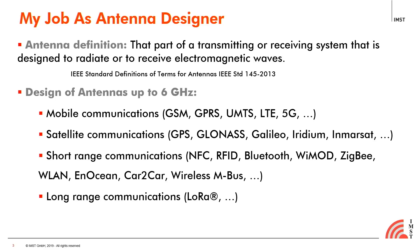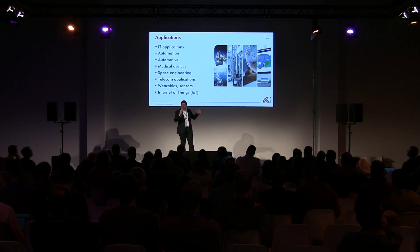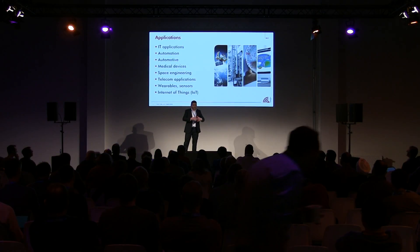You may already be familiar with mobile communications like GSM, UMTS, and 5G now coming on. We also have satellite communications such as GPS, Galileo, and Inmarsat. Then short-range communications — NFC, RFID, Bluetooth, wireless LAN at 2.4 GHz and 5 GHz — and of course long-range communications with LoRa. All these communication systems can be put into a huge range of applications, because nowadays we are moving everything to wireless — automotive, medical devices, wearables, and of course the Internet of Things.